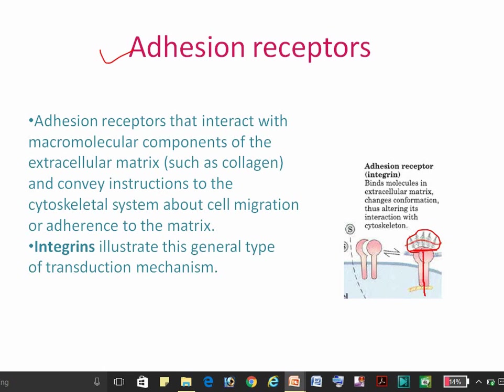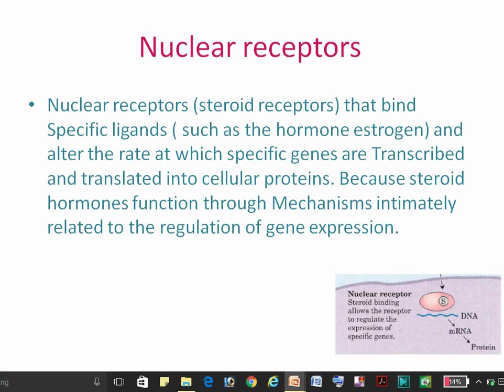The fifth type is the adhesion receptor. These receptors bind to extracellular matrix components and convert the information to the cytoskeleton system. Integrins are an example of this type of receptor.